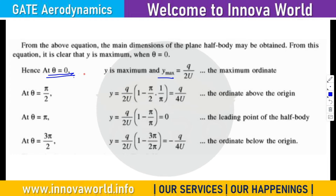The maximum y-value formula is: y-max equals lambda by 2-V-infinity. As the theta value changes, the y-value also changes. This is a key result for the Rankine half-body: y-max equals lambda divided by 2-V-infinity.